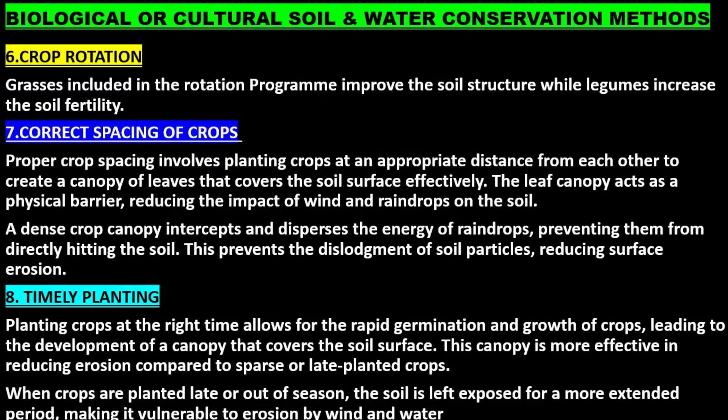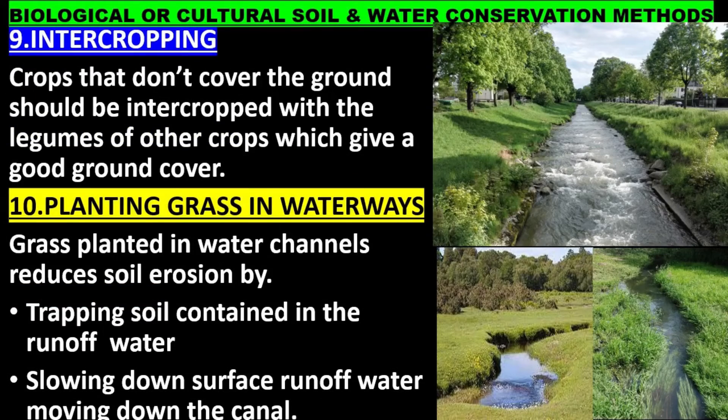Timely planting: planting crops at the right time allows for rapid germination and growth, leading to the development of a canopy that covers the soil surface. This canopy is more effective in reducing erosion compared to sparse or late-planted crops. When crops are planted late or out of season, the soil is left exposed for an extended period, making it vulnerable to erosion by wind and water.